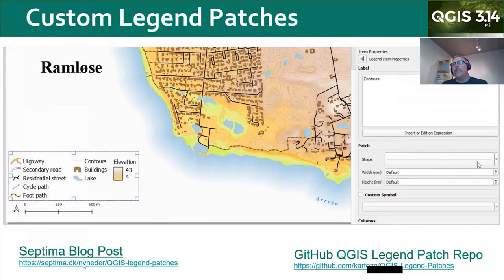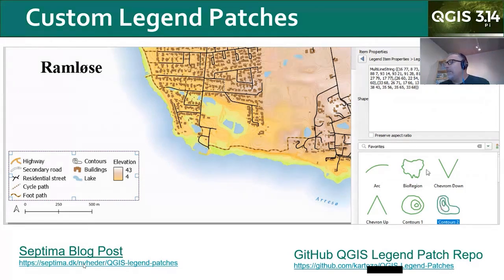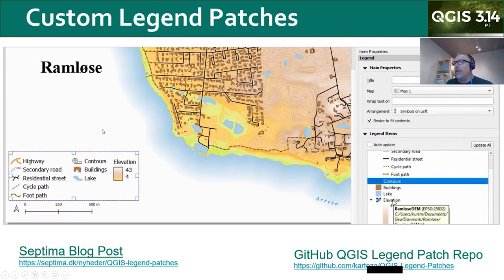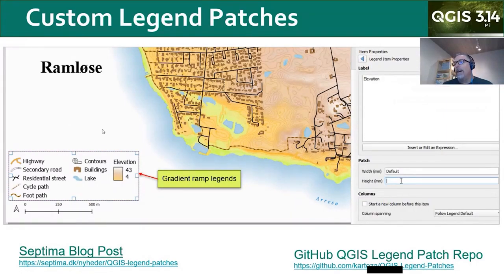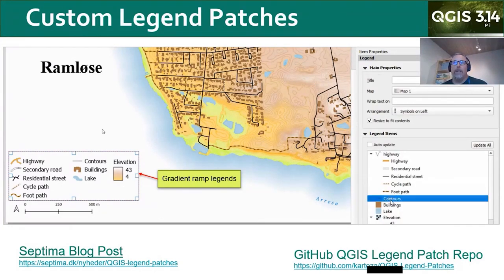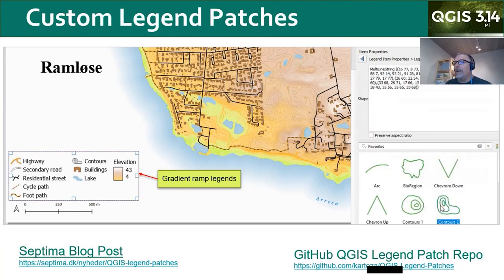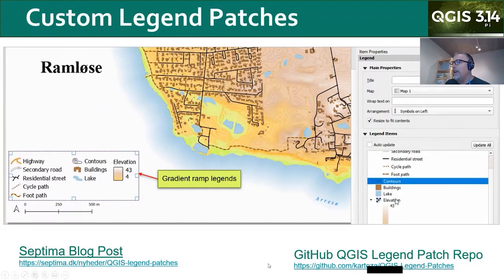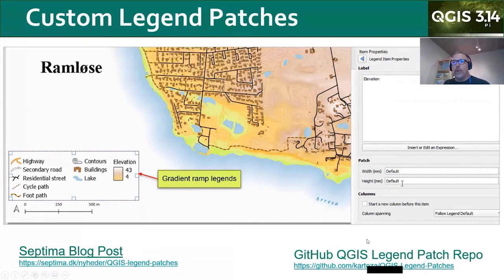One of my favorite features in the last year is custom legend patches. Here's a map and I'm going to set a contours patch for this contours layer, and you end up with a very intuitive legend. Another nice feature is gradient color ramps for legends — for elevation data, for example, it'll automatically put that in as a gradient ramp that you can modify the length, width, orientation, and labels of. There's a blog post I wrote on using QGIS legend patches, and also a GitHub QGIS legend patch repo where you can download user-contributed legend patches.